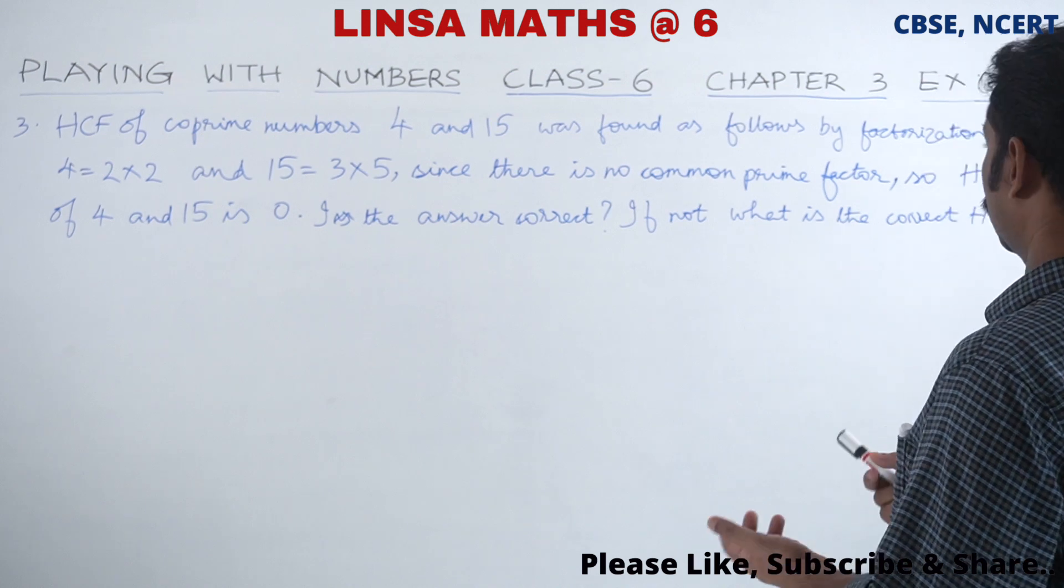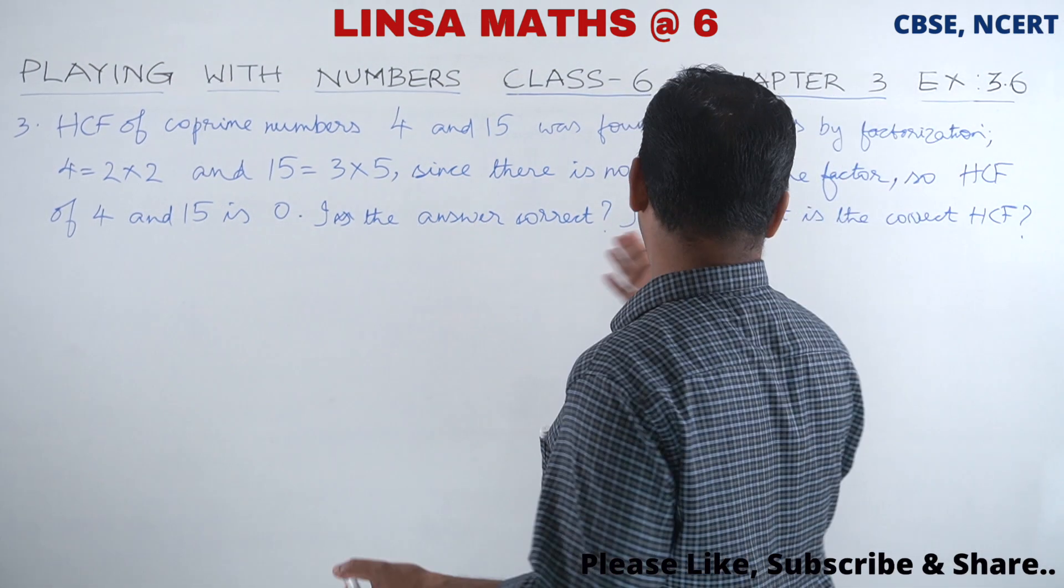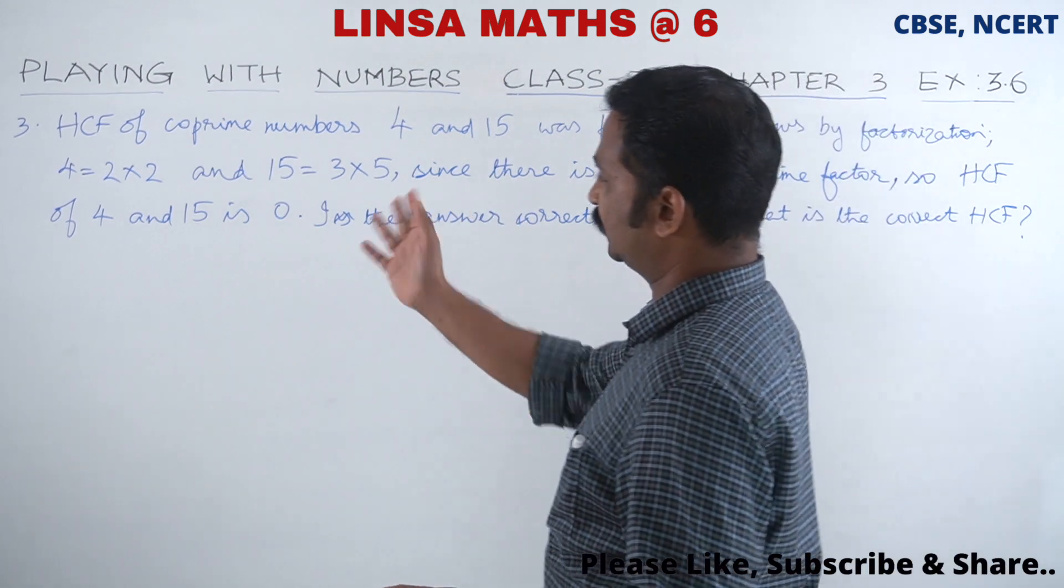HCF of 4 and 15 is 0. Common prime factor is no, HCF of 4 and 15 is equal to 0.